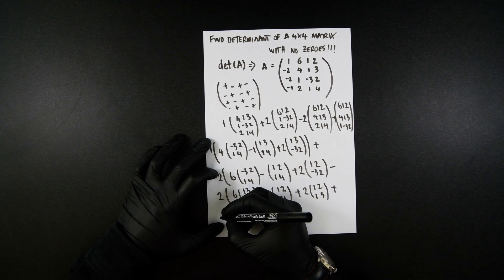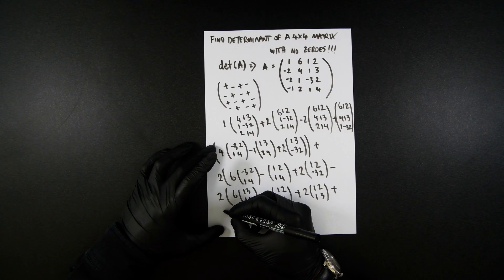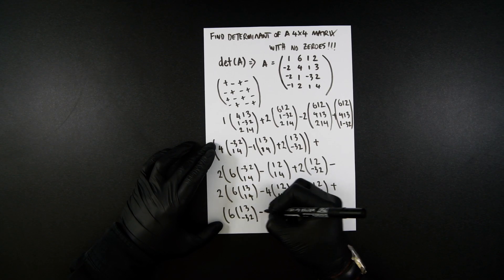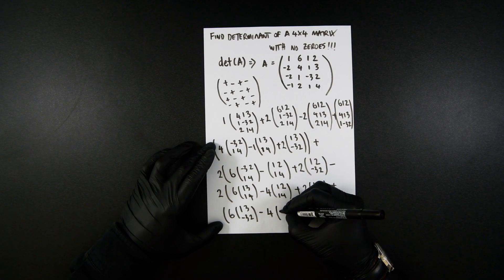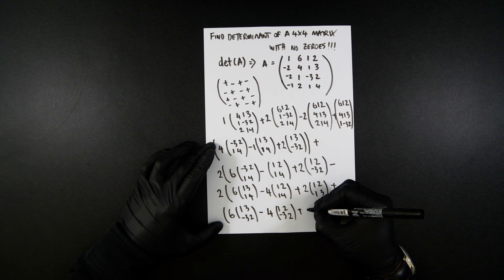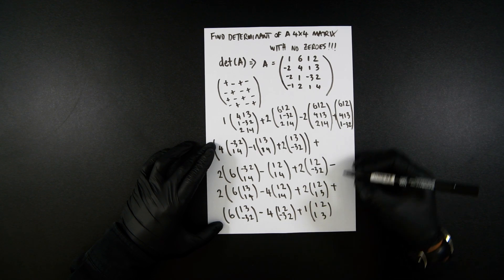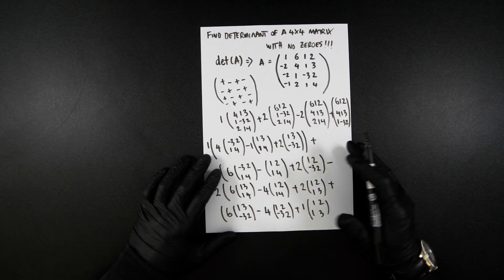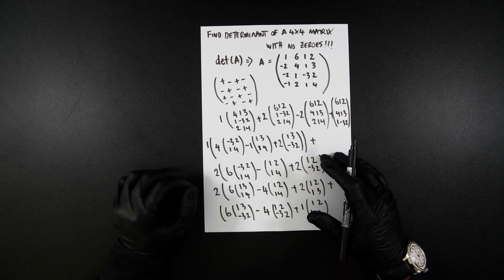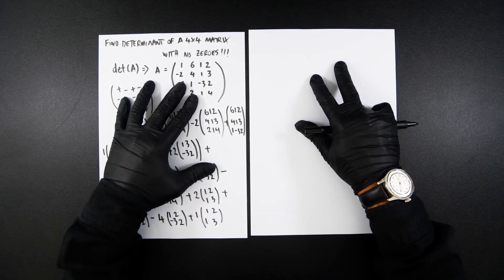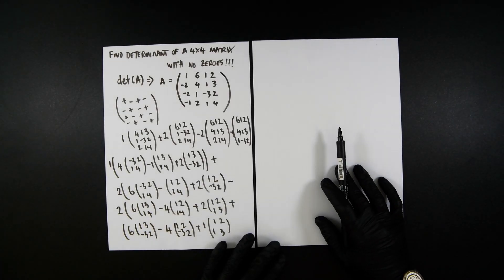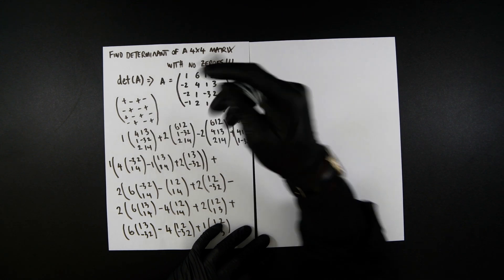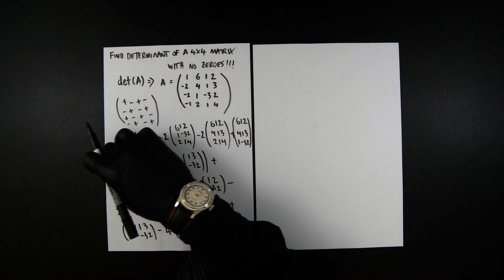And finally, the last one. It's going to be nothing on the outside of the brackets, but it's going to be 6, 1, 3, minus 3, 2, minus 4. So that's that one, minus 4, 1, 2, minus 3, 2, plus 1, 1, 2, 1, 3. So I've kind of sped through that. If you're not familiar with how to find the determinant of a 3 by 3 matrix, you need to go and watch another video. But now we're going to go to the next step. We're going to solve each of these 2 by 2 matrices and then get our solution.